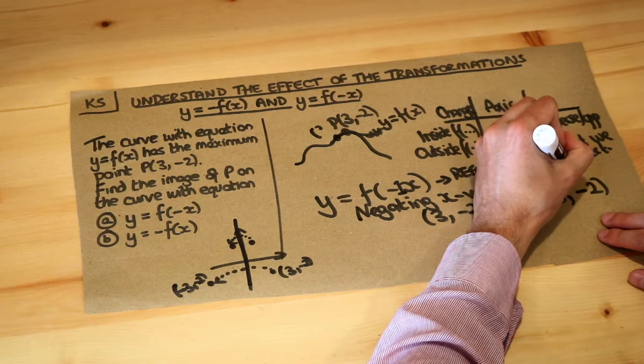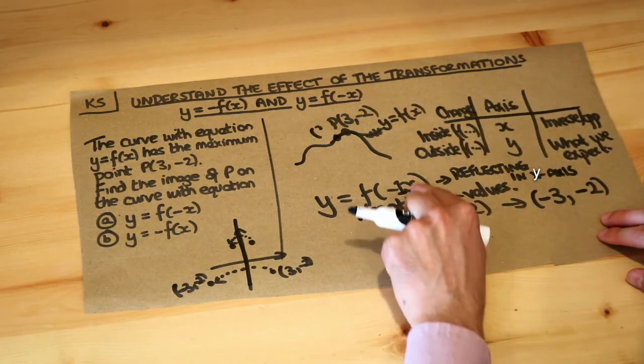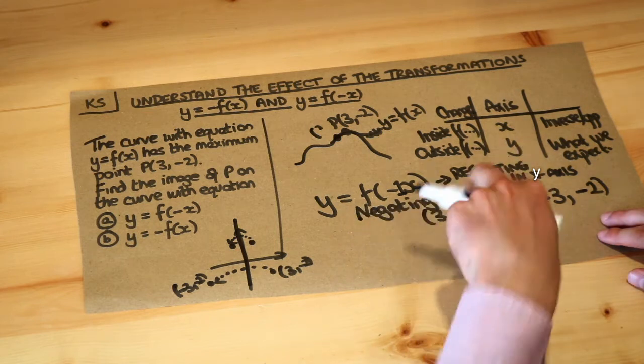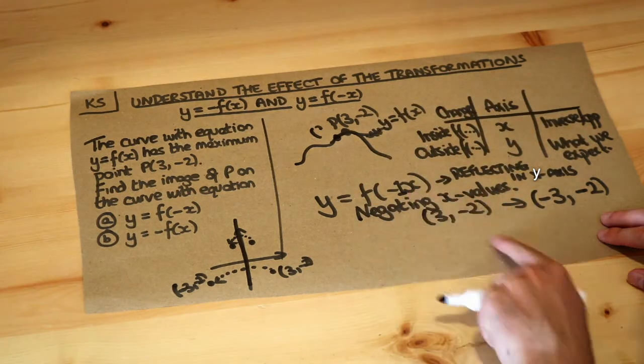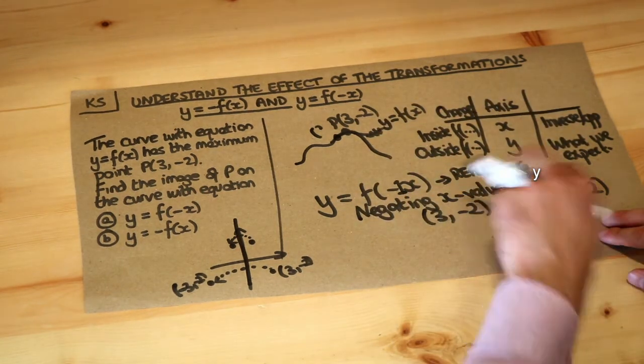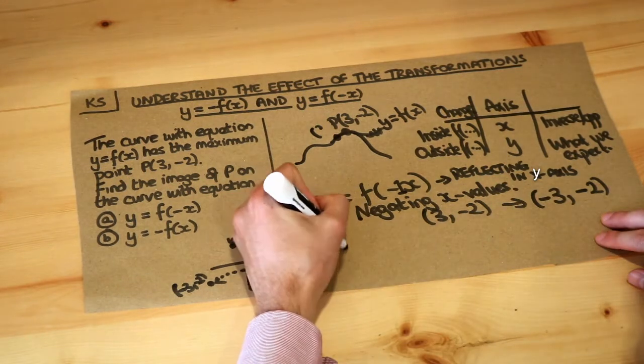Now you don't need to memorize that, you just need to memorize this table and see that because the change was inside the function we're going to negate the x values and that's what we did here. We didn't actually need to describe this transformation. What about b?